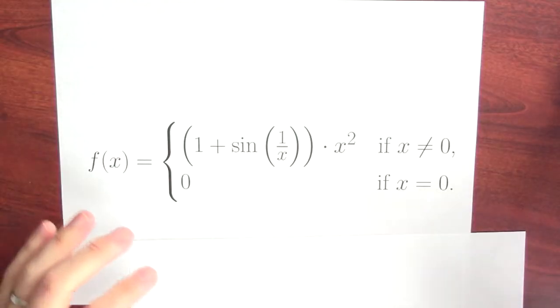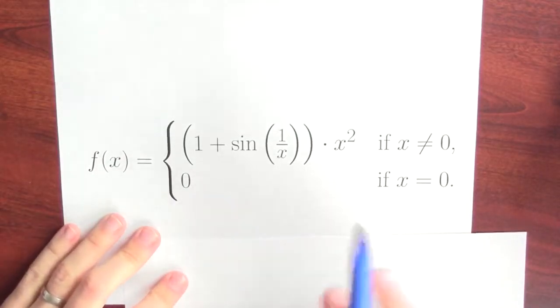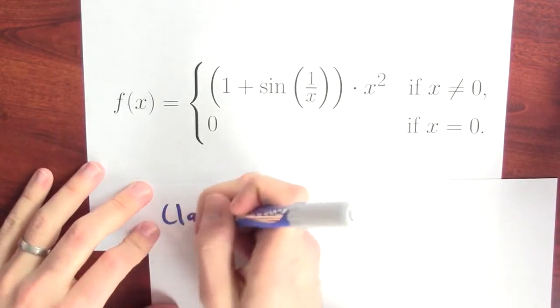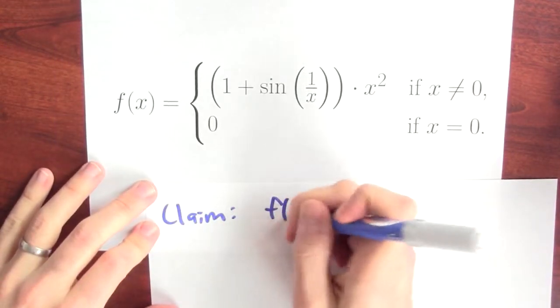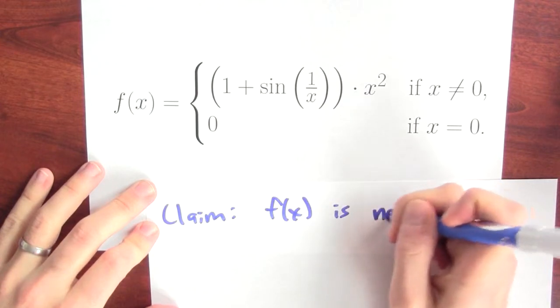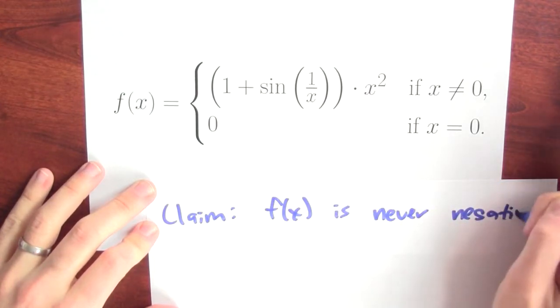In this case, there's a local minimum at 0. How do I know? Well, here's how I know. Let's take a look at this function. The claim is that f of x is never negative.